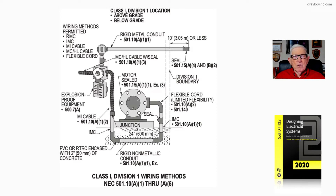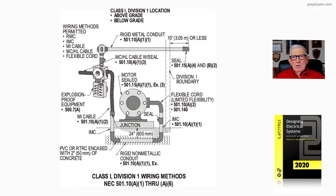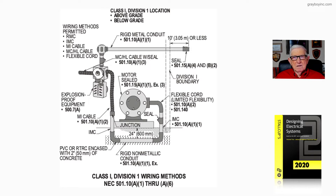501.10A1 through A7 has a number of wiring methods that could be used under certain conditions of use and installation. Rigid metal conduit, for example, is 501.10A1 item 1. When you leave the boundary area from a Division 1 boundary, within 10 feet you have to place a seal. You also have to place a seal within 18 inches of explosion-proof equipment where you're running rigid metal conduit.